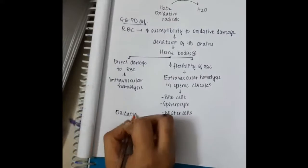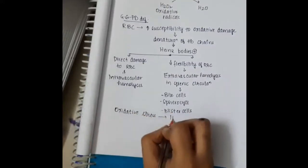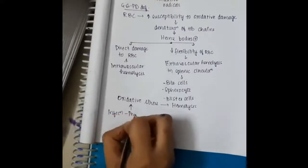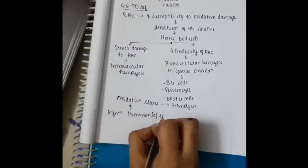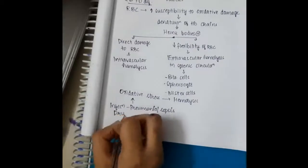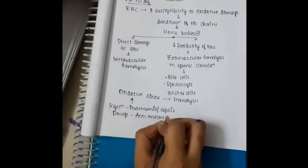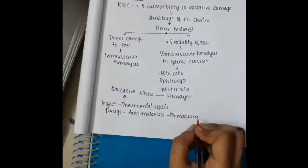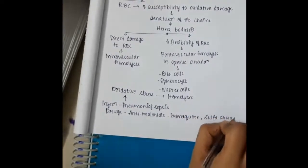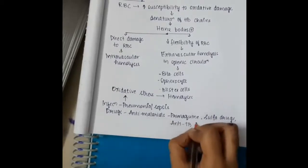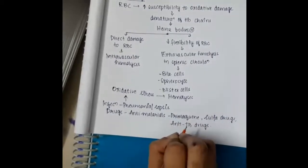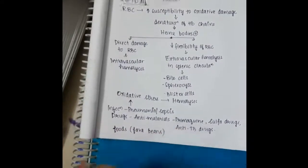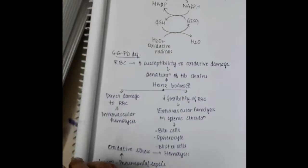These are the things that normally occur. Whenever there is oxidative stress, this oxidative stress causes hemolysis. This oxidative stress can occur due to infections like pneumonia or sepsis, drugs like antimalarials like primaquine, sulfa drugs, or anti-tubercular drugs, or sometimes foods like fava beans can also result in G6PD deficiency.